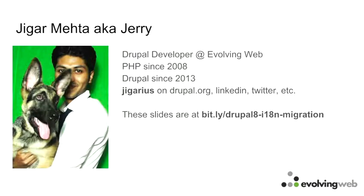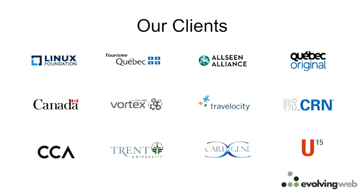This is me and my dog Ryder. I'm Jigar — people also call me Jerry. I work at Evolving Web. I've been working with Drupal since 2013 or so, and it's been great. These are some of the clients we work for at Evolving Web, and I have done a lot of migrations.